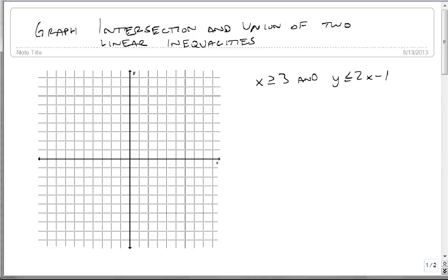We're going to combine information about linear inequalities with unions and intersections. So let's look at this problem: x is greater than or equal to 3 and y is less than or equal to 2x minus 1.